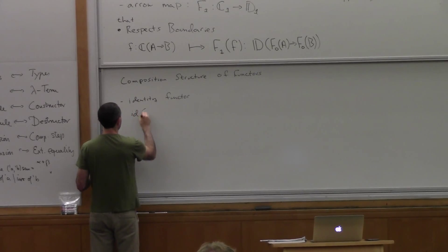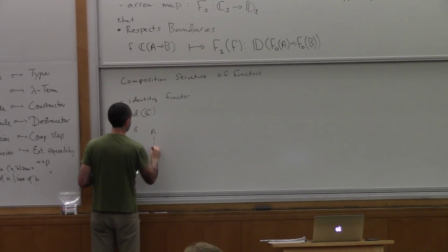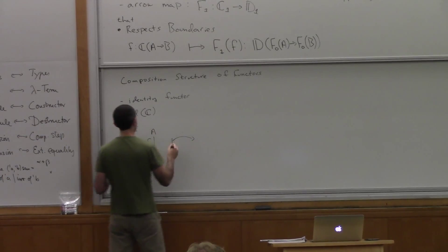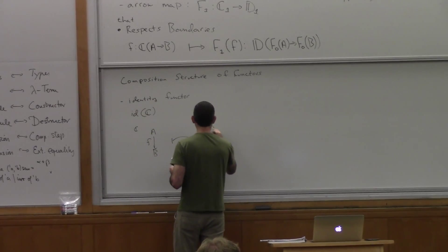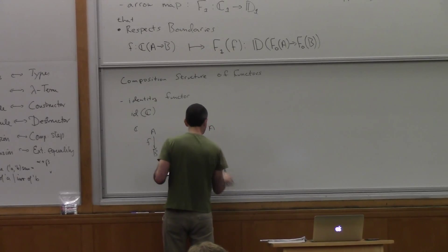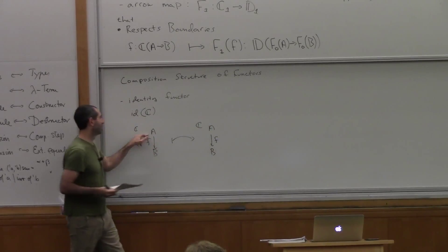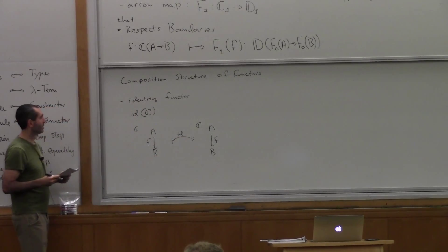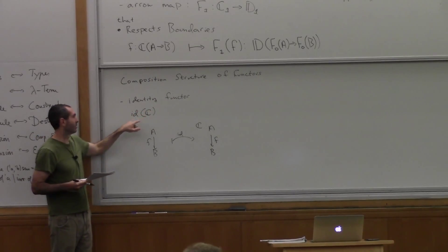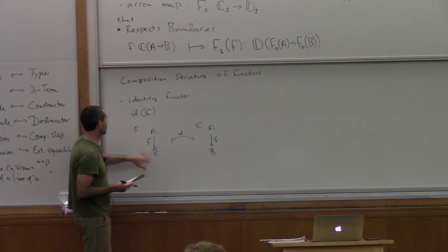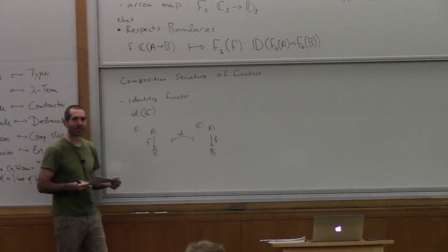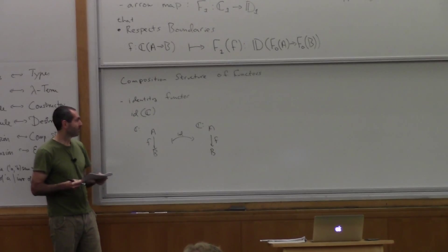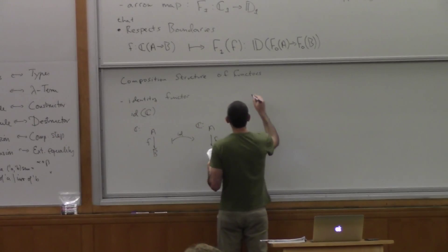The easiest way to do this is diagrammatically. If I have an identity functor on a category C, then I can draw a small diagram in C. It should transport this back to C. What should it do? It should just apply the identity function to all of the components — it should send A to A, B to B, and F to F. This is an identity functor: the domain and codomain are the same, so the categories are the same. It's the same diagram because the identity functor applies the identity function to everything in C.